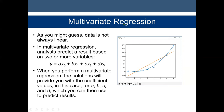We also have multivariate regression. In this case, we have more than one x value — for example, four inputs to determine the output, which is the y dependent variable. Multivariate regression analysis predicts a result based on two or more variables. When you perform a multivariate regression, the solution provides you with the coefficient values — for example, A, B, C, and D — which you can then use to predict results.